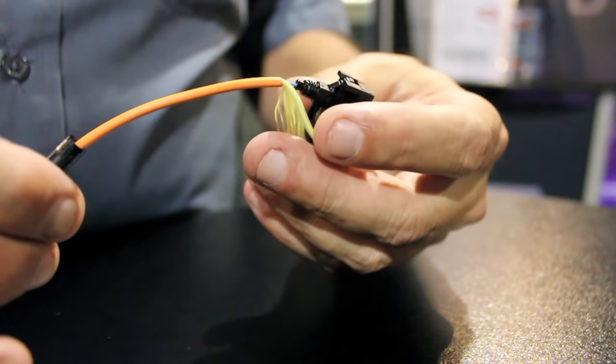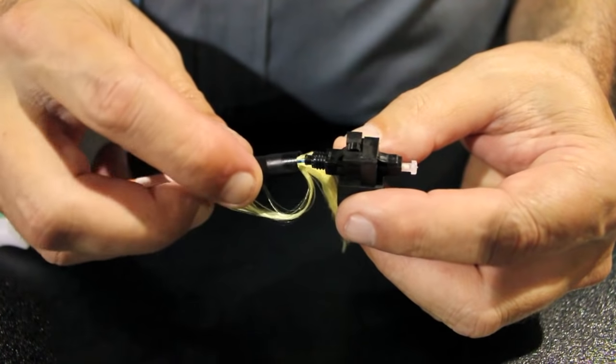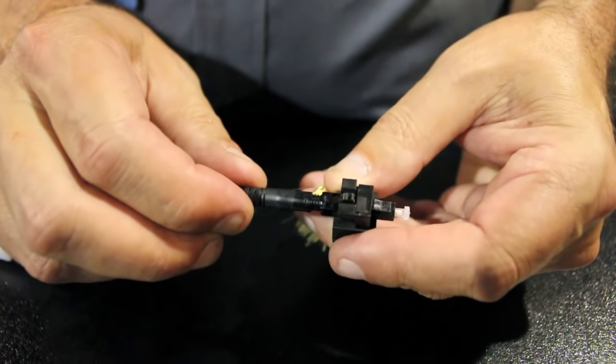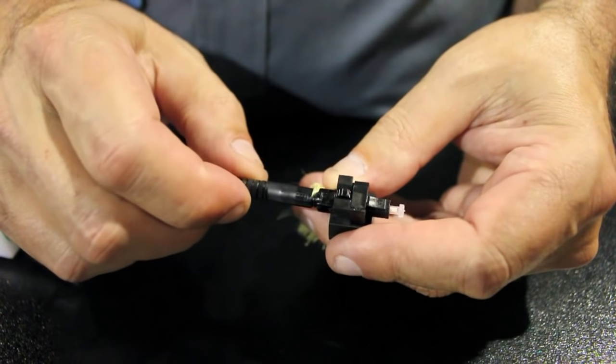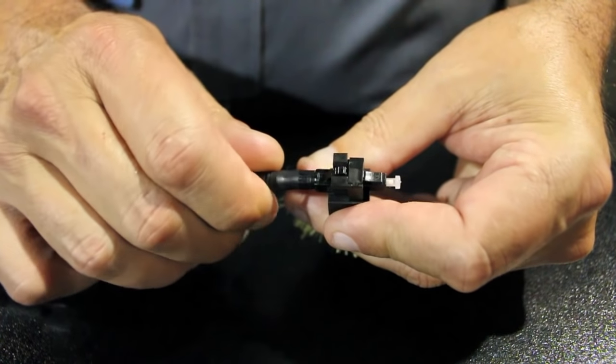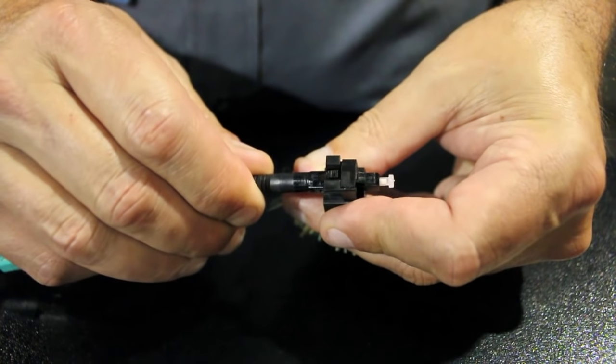Now you're ready to slide the boot up. And you notice the Kevlar fibers are still too long. And that's okay. You want to get them caught in the threads. And that gives it some mechanical strength and strain relief. And just thread the boot on until it is tight.